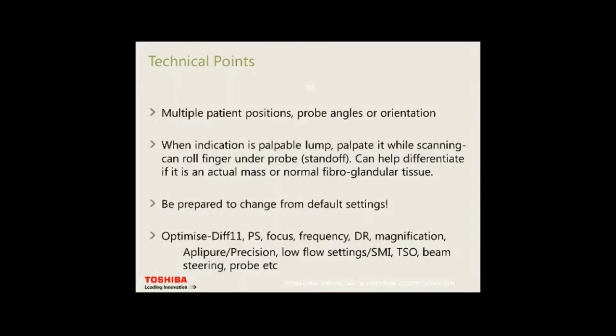Technically, use multiple patient positions, probe angles, and orientations when looking at a mass. When the indication is a palpable lump, palpate it while scanning. You can roll a finger under the probe with a standoff or lots of gel — it helps differentiate an actual mass from normal fibroglandular tissue. Be prepared to change from default settings.